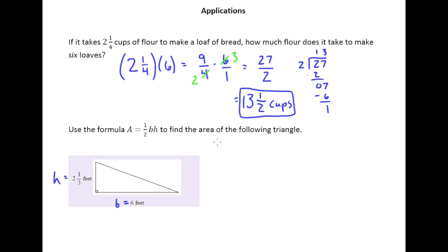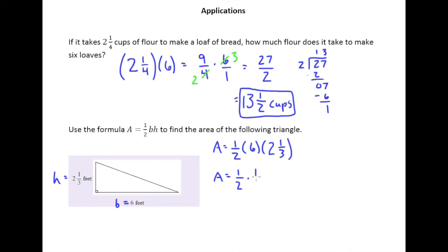So, when it gives us this formula, we understand we can calculate area by just saying area equals one-half. And remember, letters and numbers just sitting next to each other mean multiplication. One-half times six times two and one-third. We know the six should be turned into a fraction by making it six over one, and two and one-third needs to be turned into an improper fraction.